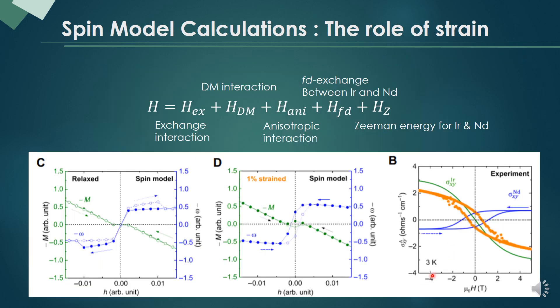This can be shown by the spin model calculation. We put the various terms like this, and here's the relaxed film result, and this is a 1% strain result. Here, ω is the T1 octupole.